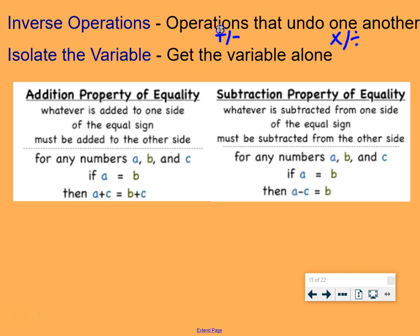We have two properties of equality that we're going to be using. The addition property of equality means, whatever is added to one side of the equal sign, must be added to the other side. So, here we have an algebraic example. If a equals b, then a plus c equals b plus c. We had to add c to both sides.